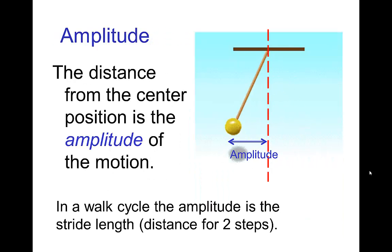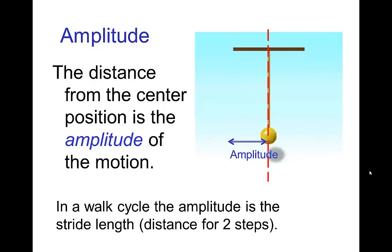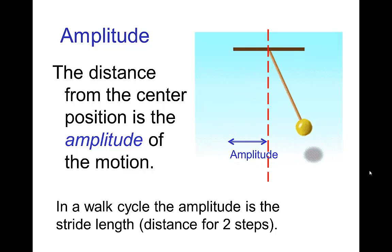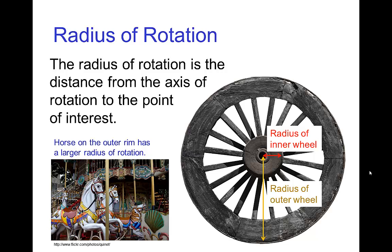The next element is the amplitude. When we have cyclic motion, the amplitude is the distance from the center position for the motion. For a walk cycle, we could define the amplitude as the stride length — the distance for two steps. For rotation, the distance we'd be interested in would be the radius of the rotation, such as the radius of the inner or outer wheel.